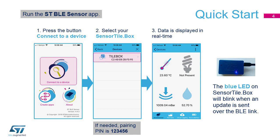The blue LED on the box will blink, signaling a connection is made. On the phone, you will get a new screen showing four icons. Three of them will have readings just beneath them. These readings are the measurements done by your SensorTile.Box in real-time. Please note that the SensorTile.Box does not have a light sensor, so one icon is not enabled.